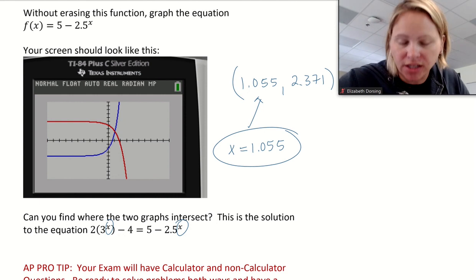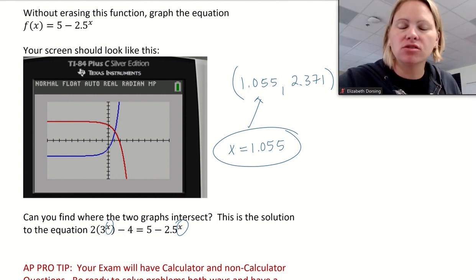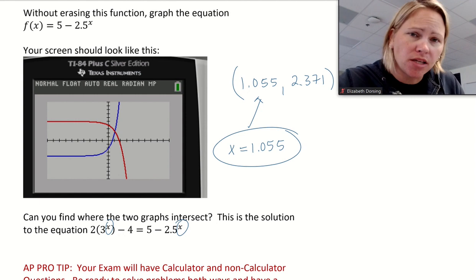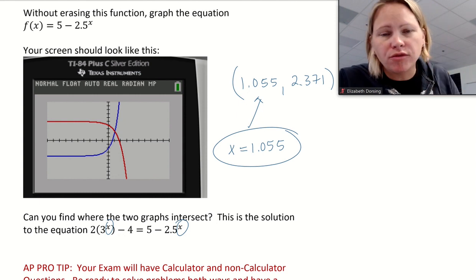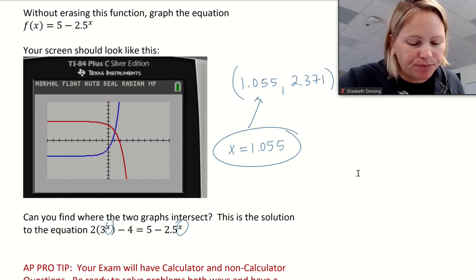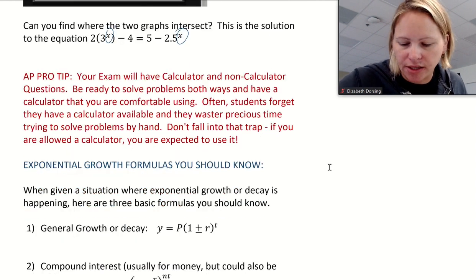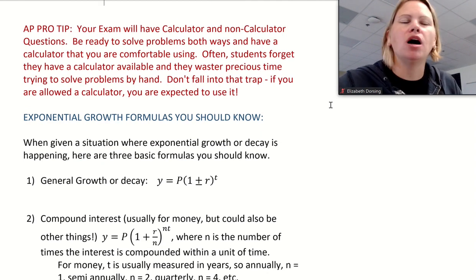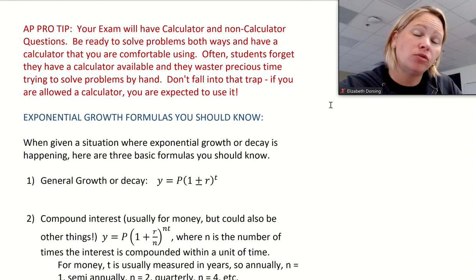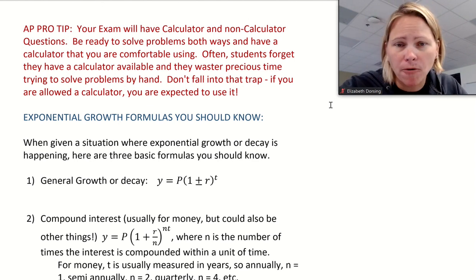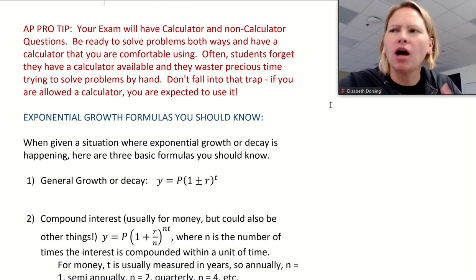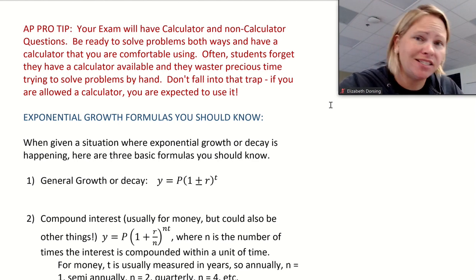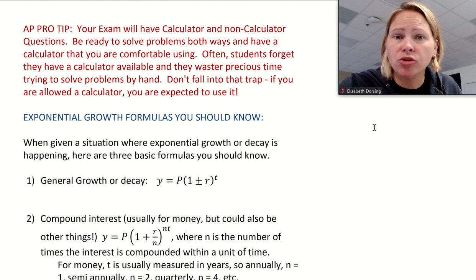The x-coordinate, 1.055, is the solution I'm looking for, since I'm solving for x. I could also solve this algebraically — you always need to be ready to solve things with and without a calculator. On the AP exam, there are four parts total: two are calculator-based and two are not. So you have to be able to solve these problems both ways. Some problems you cannot approach without a calculator, but for the most part you should think about both approaches.